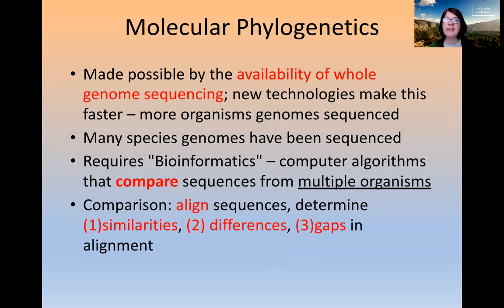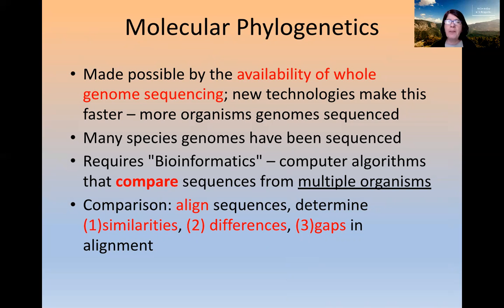We can now know every letter in the DNA of many different organisms. Advances in sequencing technologies have made sequencing cheap and fast, and we have more and more whole genomes for more and more organisms. New and better software and algorithms help us rapidly assemble and compare these genomes. This requires a new discipline called bioinformatics, which involves computer algorithms that compare sequences from multiple organisms and from these comparisons infer evolutionary relationships. The comparison is complex and is done by complicated computer programs.